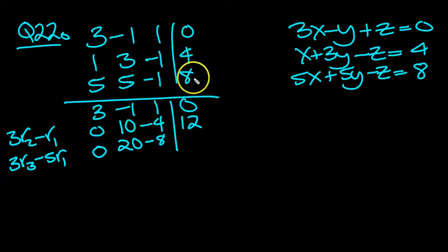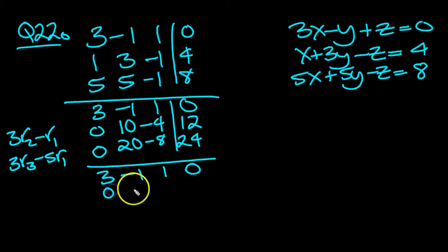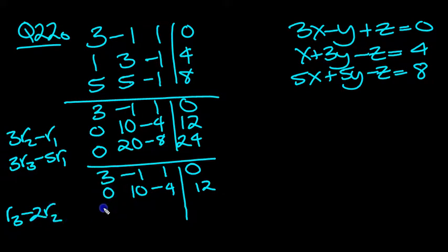So now we'll get rid of the 20. So we've got 3, -1, 1, 0, 0, 10, -4, 12. And then we can do row 3 take two row twos, so row 3 take away two row twos.